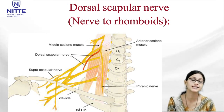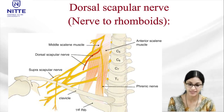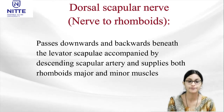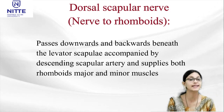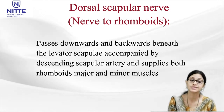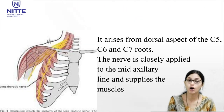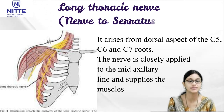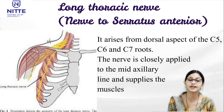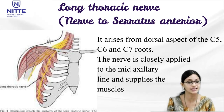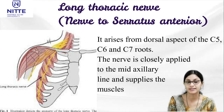The dorsal scapular nerve, also called nerve to rhomboids, pierces the scalenius medius, passes downwards and backwards beneath levator scapulae, accompanied by the descending scapular artery, and supplies both rhomboids major and minor muscles. The long thoracic nerve, otherwise called nerve to serratus anterior, arises from the dorsal aspect of C5, C6 and C7 roots. The nerve is closely applied to the mid axillary line and supplies the muscle segmentally.